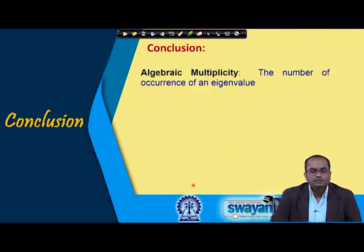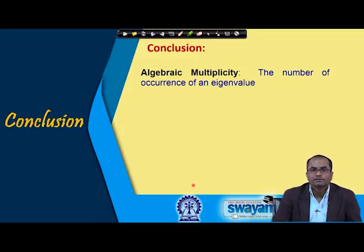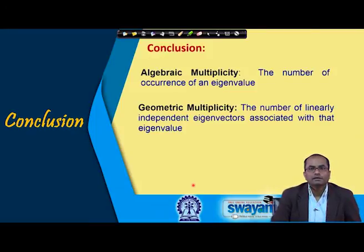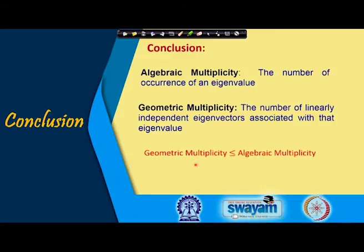In conclusion, in this lecture we have talked about algebraic multiplicity — the number of occurrences of an eigenvalue as a root of the characteristic equation — and geometric multiplicity — the number of linearly independent eigenvectors associated with that eigenvalue. The geometric multiplicity is always less than or equal to the algebraic multiplicity. We have also introduced similar matrices: B and A are similar if B = P⁻¹AP for some invertible matrix P.